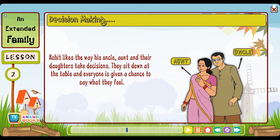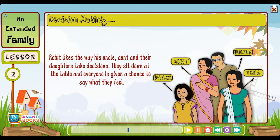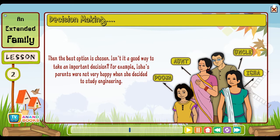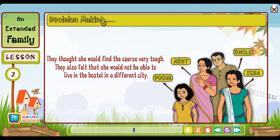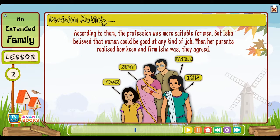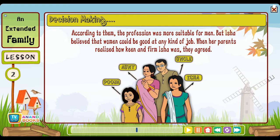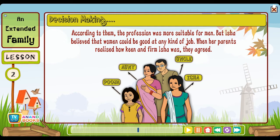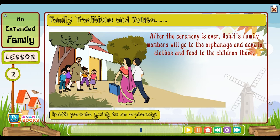Rohit likes the way his uncle, aunt and their daughters take decisions — they sit down at the table and everyone is given a chance to say what they feel, then the best option is chosen. For example, Isha's parents were not very happy when she decided to study engineering. They thought she would find the course very tough and would not be able to live in the hostel in a different city. According to them, the profession was more suitable for men. But Isha believed that women could be good at any kind of job. When her parents realized how keen and firm she was, they agreed.